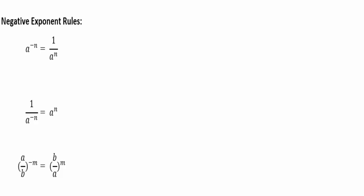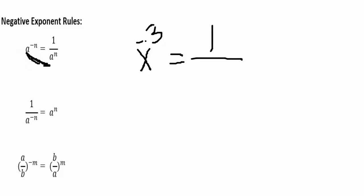This rule says that when we have a base raised to a negative power — think of x raised to the negative third power — this is going to equal 1 over that same base. My base is x, so it stays x. The only difference is that this exponent used to be negative, now it's positive. So instead of negative 3, I now have positive 3. So x to the negative third is actually 1 over x to the positive third.